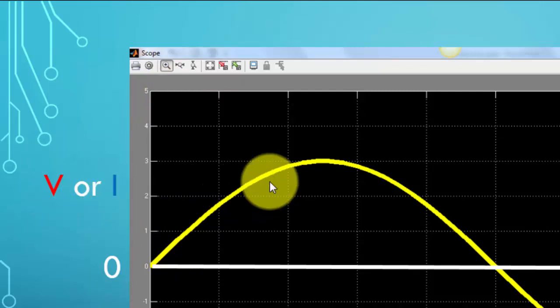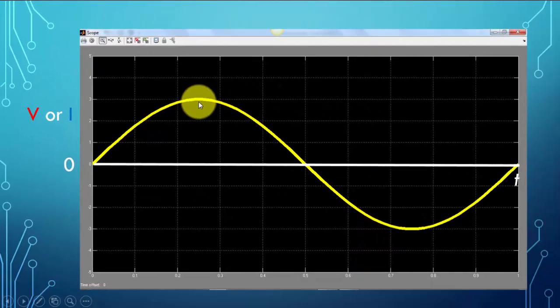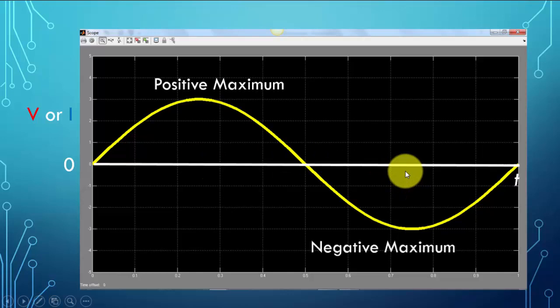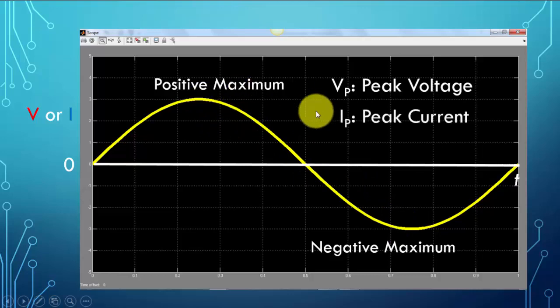We see here a maximum on the positive side of this curve. We call that the positive maximum. And here we have the corresponding negative maximum. For voltage, we call this the peak voltage, either the positive or the negative maximum. And then we have a peak current that is similar to what we described here.